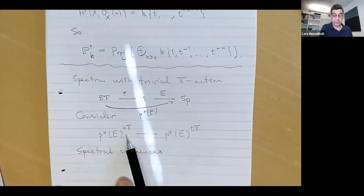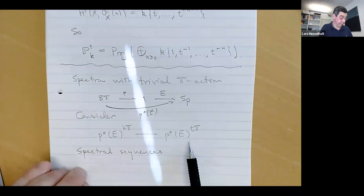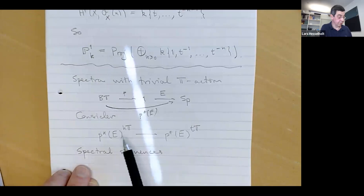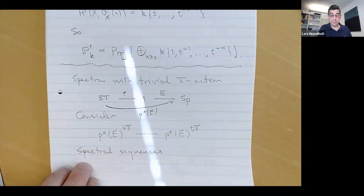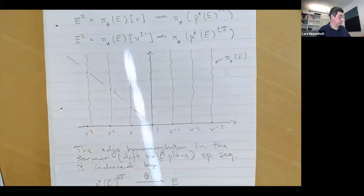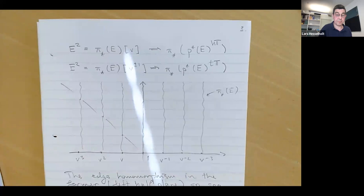We can take the homotopy fixed points of that spectrum with circle action, and we can take the Tate spectrum. When we get to cyclic homology, this will correspond to negative cyclic homology, and this will correspond to periodic cyclic homology. Whenever we have a spectrum with circle action, we have spectral sequences which look like this.